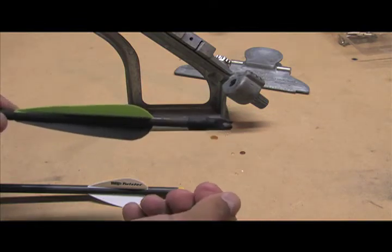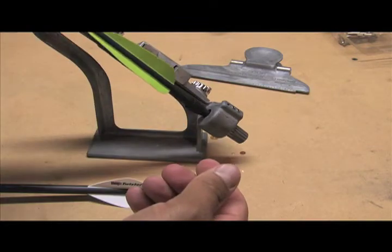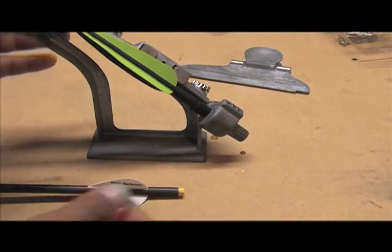So, it makes fletching a whole lot easier. You can put it in your fletching jig here. This one, of course, already has veins on it, and there you go.